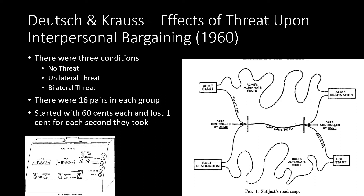Empirical examples come from Deutsch and Krauss in the 1960s, in their paper 'The Effects of Threat upon Interpersonal Bargaining.' Three conditions were used: no threat, unilateral threat (one party could apply the threat), and bilateral threat (both parties could). There were 16 pairs or dyads in each of the three conditions.